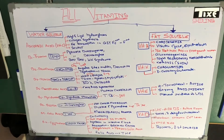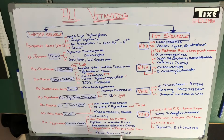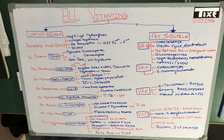One thing I have to make clear: if cyanocobalamin is not present, we are going to get an anemia called megaloblastic anemia. But if the intrinsic factor is not present, it is called pernicious anemia. We may have cyanocobalamin in our intestine, but we are not going to absorb it because we haven't got the intrinsic factor. So if we haven't got intrinsic factor, we get anemia, which is called pernicious anemia.